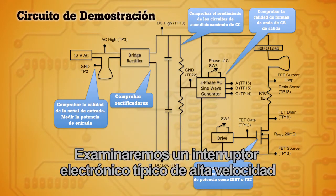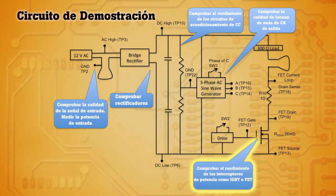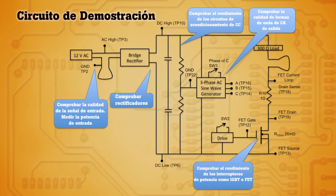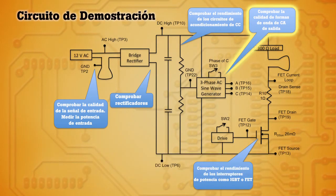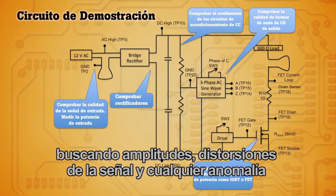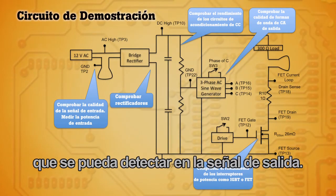We'll look at a typical high-speed electronic switch to see that it's performing correctly and not causing any transients on the output. And finally, we'll also look at the resultant AC output waveform, checking for amplitudes, signal distortion, and any anomalies we may find on the output signal.